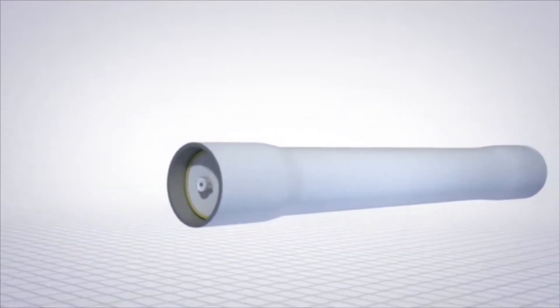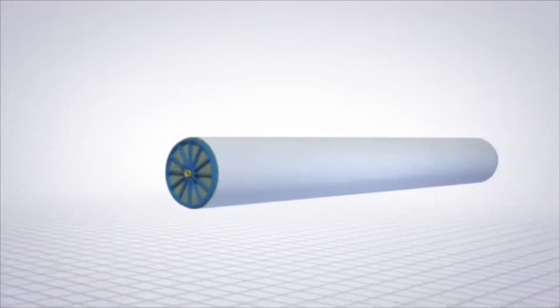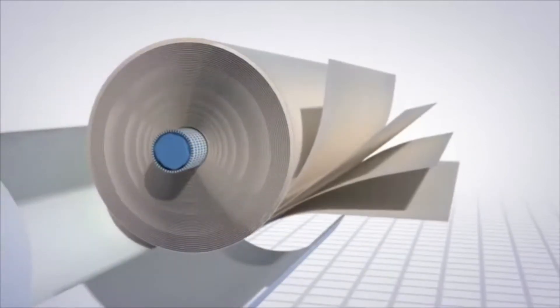Rolls of membrane sheets are wound into cylinder shaped elements. There are several elements inside each long pressure vessel.